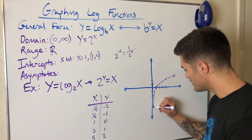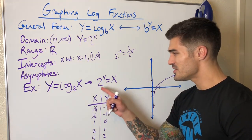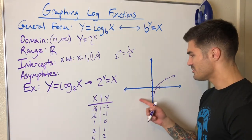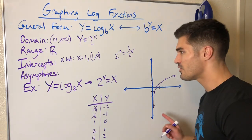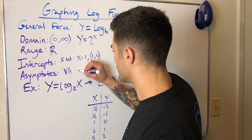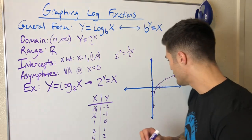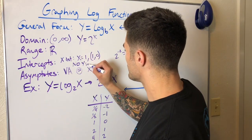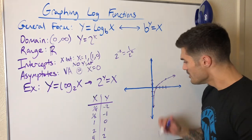I have a feeling that the y-axis is going to be an asymptote. Think about it: can x ever equal zero? You can't raise 2 to any power and get zero, so x will never equal zero and will never be negative. That means we have a vertical asymptote at x equals zero. And since the graph never touches the y-axis, there is no y-intercept.